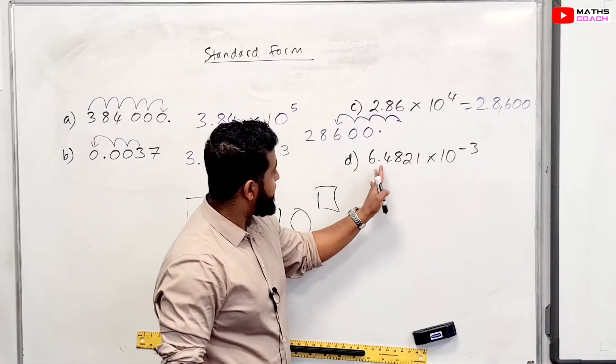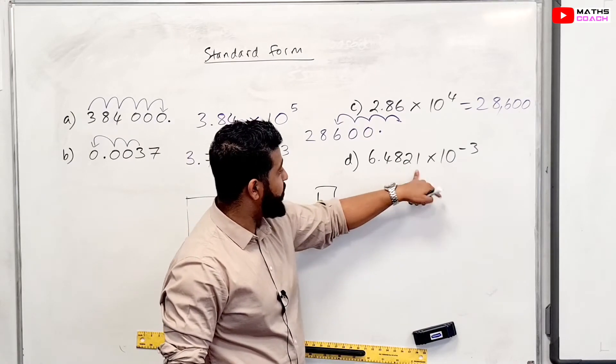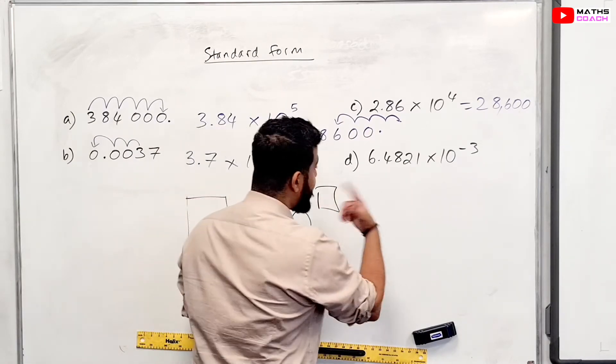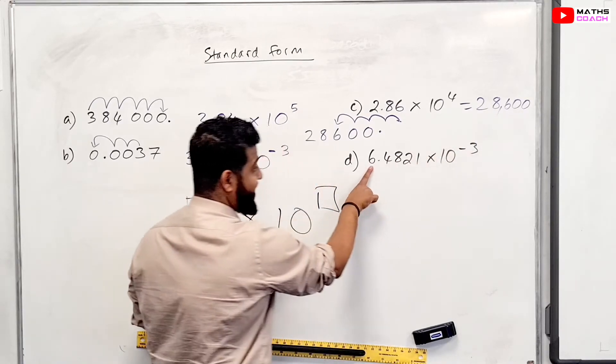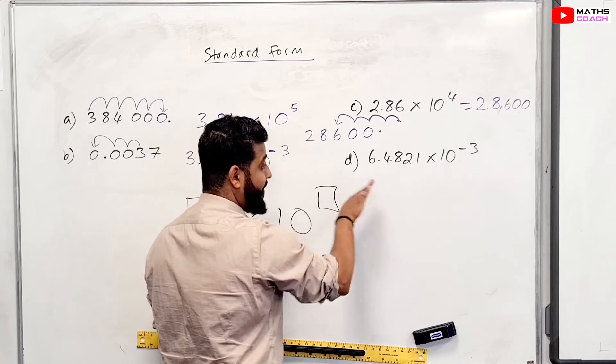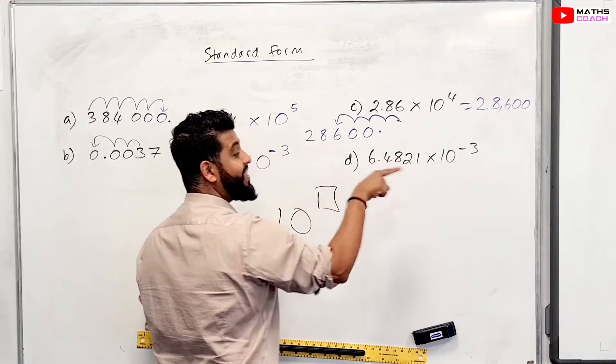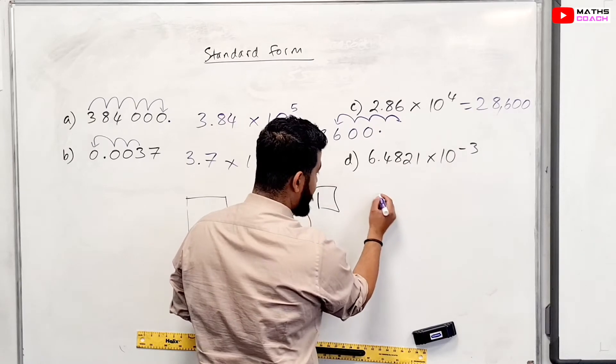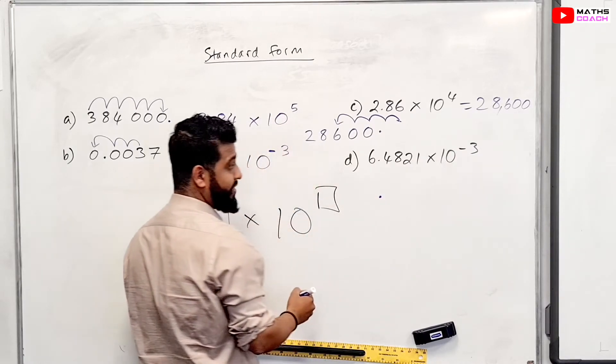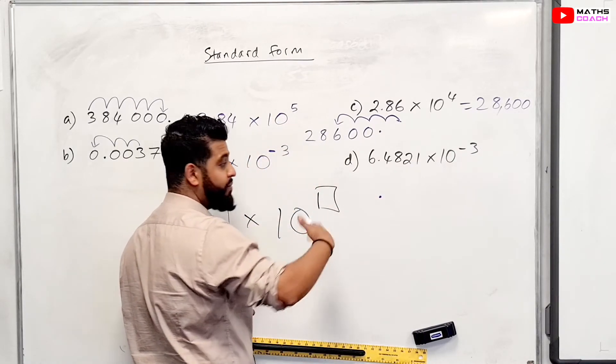Now, on to this number, 6.4821 times 10 to the power of minus 3. Now, remember, this answer is going to get smaller, right? So this 6, or this 4, or this 8, or whatever you choose, is going to move in this direction. So how many times? Three times. So what does that look like? Once again, just make sure you add your decimal place, because that doesn't move. The numbers move around that. That's how I like to think of it. Now, I know that some people like to move the decimal place, and that's also fine too. Whatever you like.